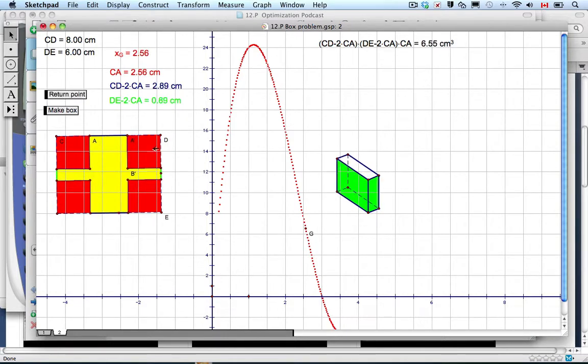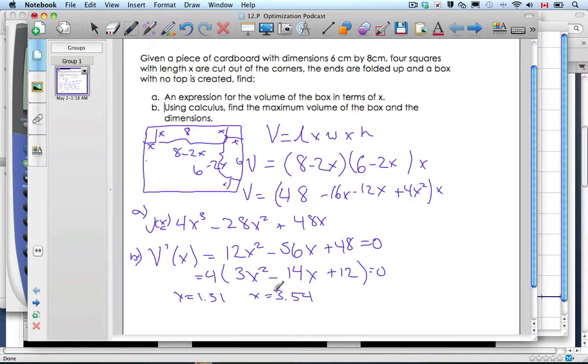So that 3.5 must have been a minimum. Even though that minimum exists it doesn't seem to make much sense because if this distance here is six I can't cut out 3.5 from one side and 3.5 from the other side because that's more than six. So the domain of this volume function really is up to three, from zero to three. That means I can ignore this value.